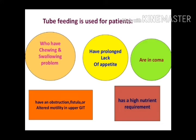We can see two types of tube feeding which can be used for patients. The indications are very self-explanatory: chewing or swallowing problems, low weight, coma, GI system problems such as obstruction, fistula, or motility problems, or when the body's nutritional demand has increased but we can't get enough nutrition from a normal diet.